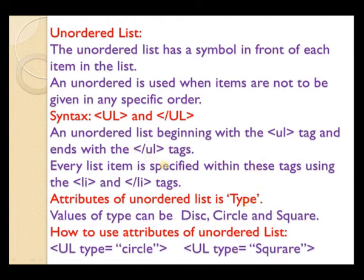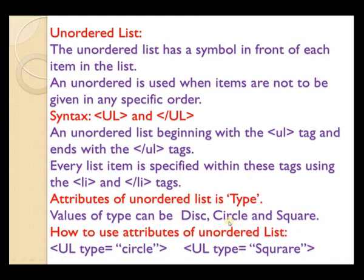The type attribute for unordered list can have values: disk, circle, or square — meaning before each item, either a disk symbol, a circle symbol, or a square symbol will appear. These are represented as ul type equal to circle and ul type equal to square, which show a circle or square before each item respectively.